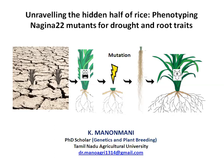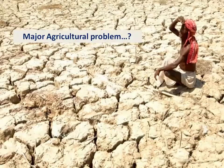We need to have a balance between food production as well as water requirement. The major agricultural problem I am going to deal with is drought, which is considered as the leading threat affecting rice crop production.